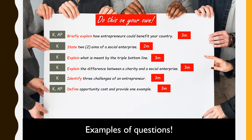'Explain what is meant by triple bottom line' — there are three objectives, and you would need to elaborate on each objective properly. It is essentially defining what the triple bottom line is. 'Explain the difference between a charity and a social enterprise' — a clear-cut question where you compare the two and explain where they differ. 'Identify three challenges of an entrepreneur' — identify means listing out those three challenges, one mark each for three marks. The final question, 'define and provide one example,' is three marks, so you need both your knowledge and your application in your answer.